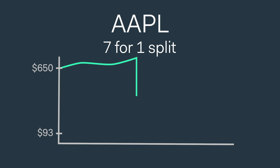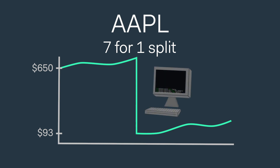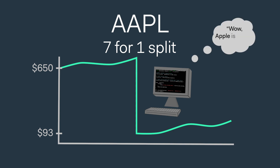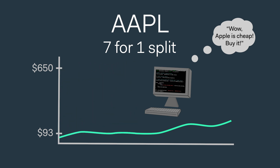If one were to take note of the price drop without knowing about the split, he or she might think the price dropped due to some sort of disappointing news about Apple. Furthermore, an algorithm that ingests price history data might take such a price drop as a signal to take action — 'Apple is cheap! Buy it!' For this reason, the price history of a stock is adjusted after a split takes place. We'll talk more about this later in this video series.